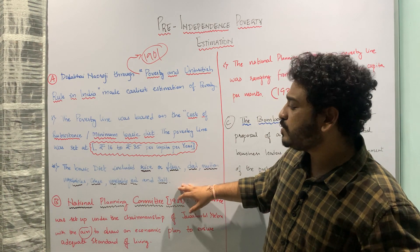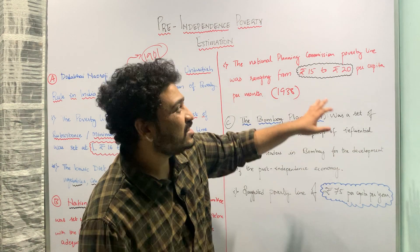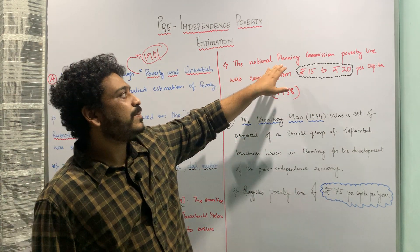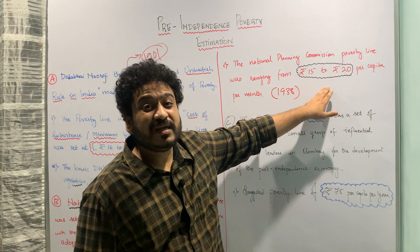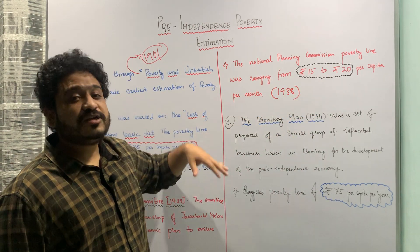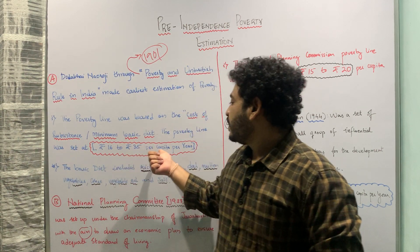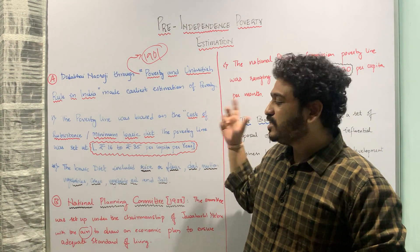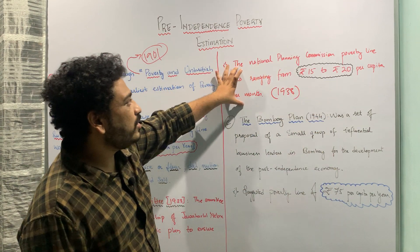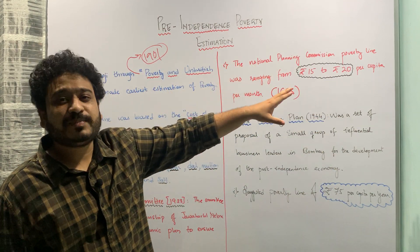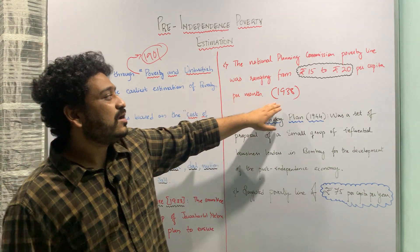The poverty line set up by the National Planning Committee was ranging from rupees 15 to rupees 20 per capita per month. Note that this is per capita per month, whereas Naoroji's estimate was per capita per year. This is an important distinction as far as the National Planning Committee's poverty line estimation is concerned in the Indian context, set in 1938.